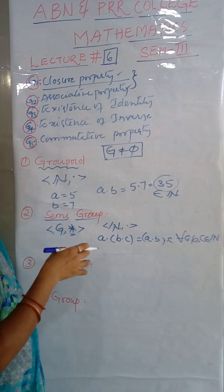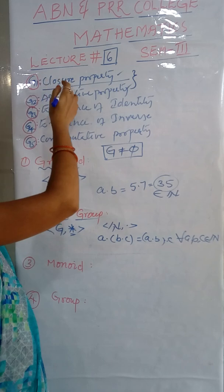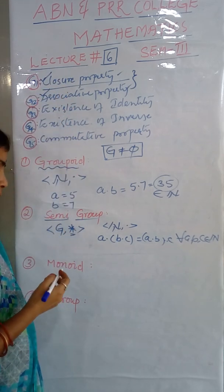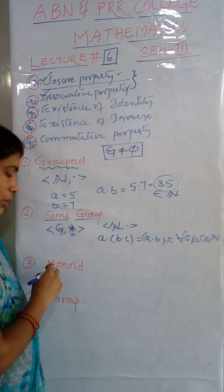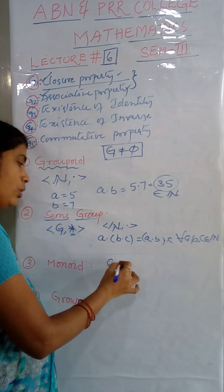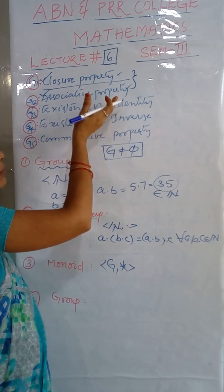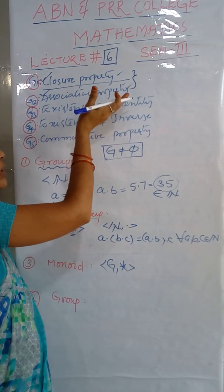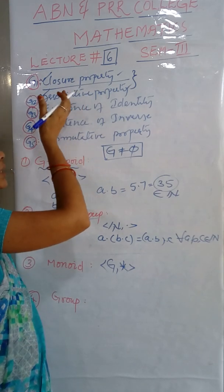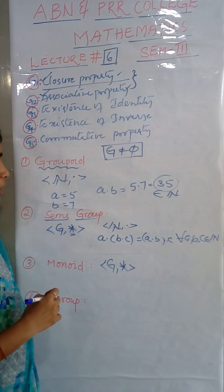What is a semigroup? A non-empty set satisfying two properties, closure property and associative property, is called a semigroup. Next, coming to the third one, monoid. Which set is a monoid? If we add existence of identity property to the semigroup, third property existence of identity, that's a monoid.